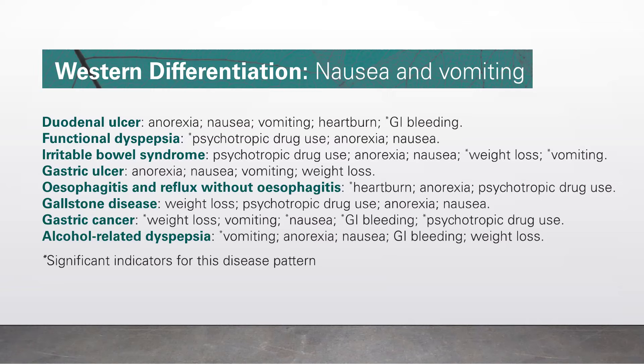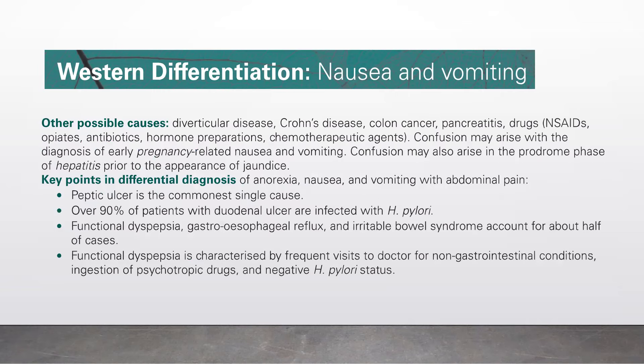Significant indicators for this disease pattern are those with asterisks. Other possible causes include diverticular disease, Crohn's disease, colon cancer, pancreatitis, and drugs such as NSAIDs, opiates, antibiotics, hormone preparations, and chemotherapeutic agents. Confusion may arise with diagnosis of early pregnancy-related nausea and vomiting, and also in the prodrome phase of hepatitis prior to the appearance of jaundice.